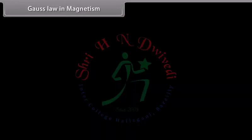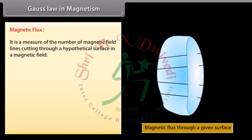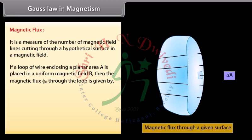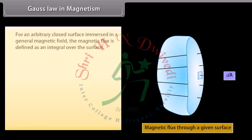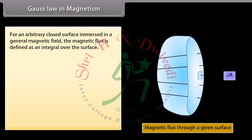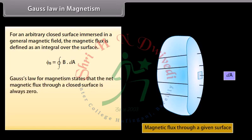Gauss's law in magnetism — Magnetic flux: It is a measure of the number of magnetic field lines cutting through a hypothetical surface in a magnetic field. If a loop of wire enclosing a planar area A is placed in a uniform magnetic field B, then the magnetic flux φ_B = B·A = BA cos θ, where θ is the angle between the magnetic field and the normal to the plane of the loop. For an arbitrary closed surface, φ_B = ∮ B·dA. Gauss's law of magnetism states that the net magnetic flux through a closed surface is always zero: ∮ B·dA = 0. The SI unit of magnetic flux is Weber.